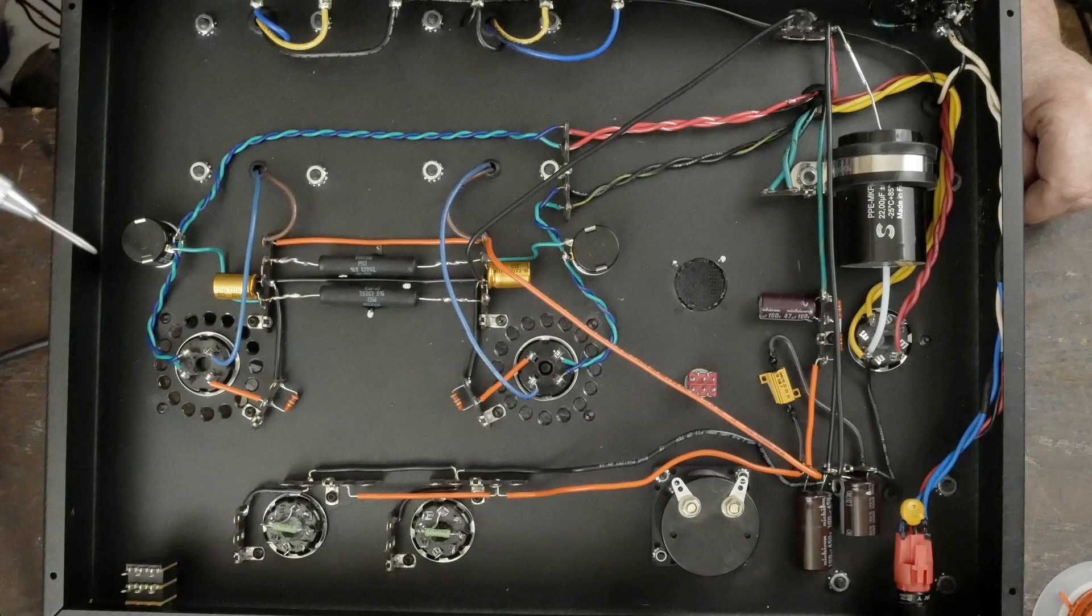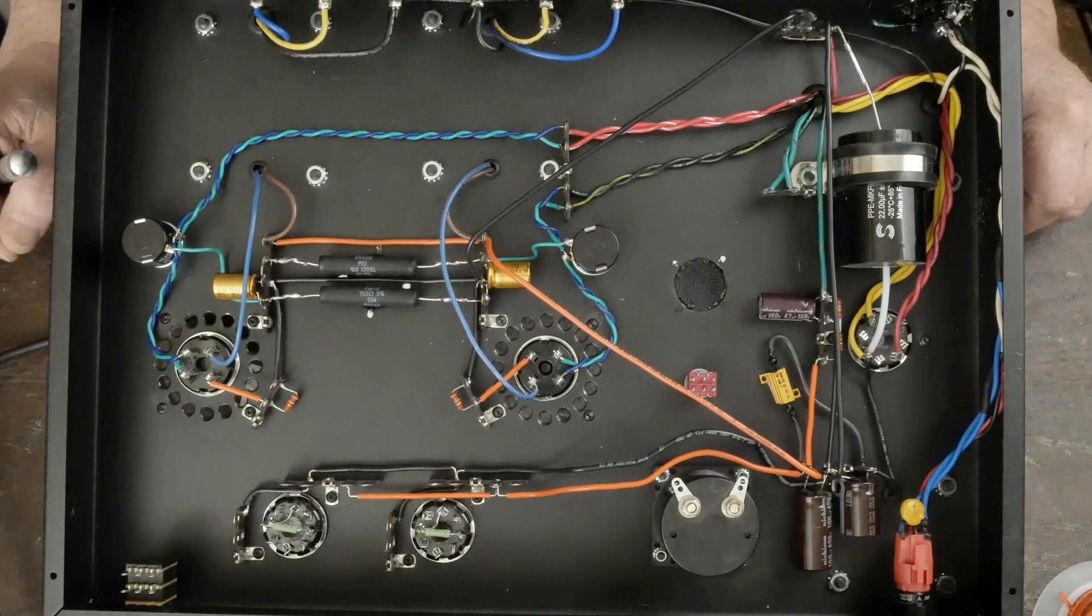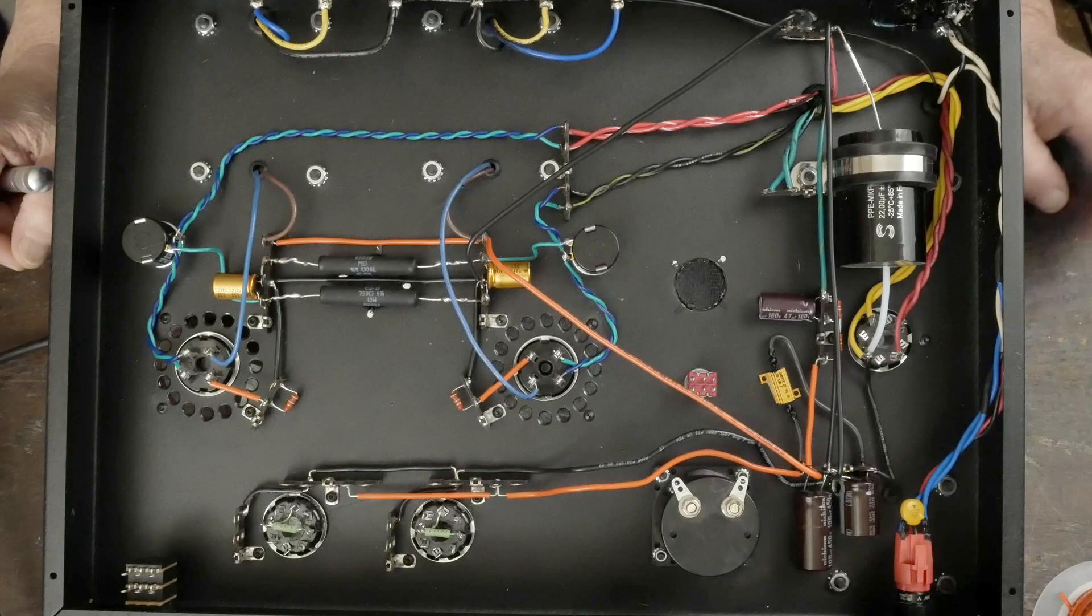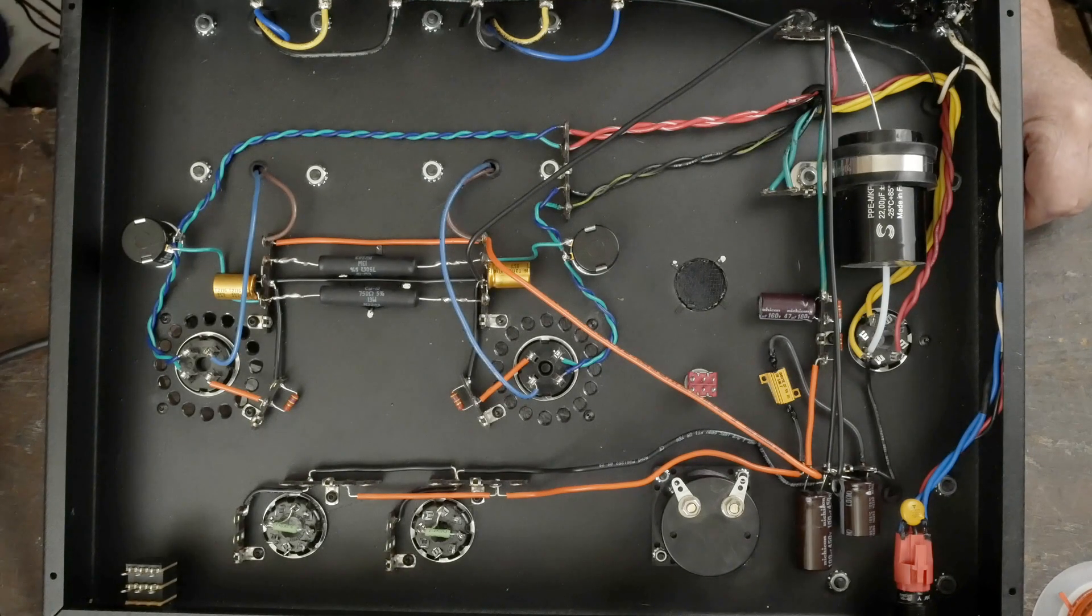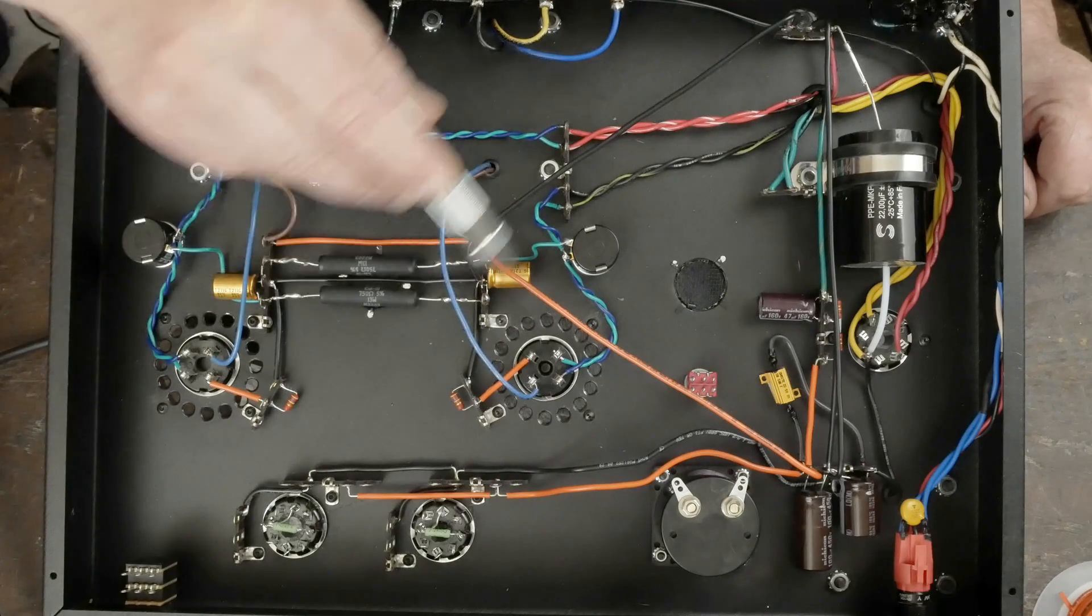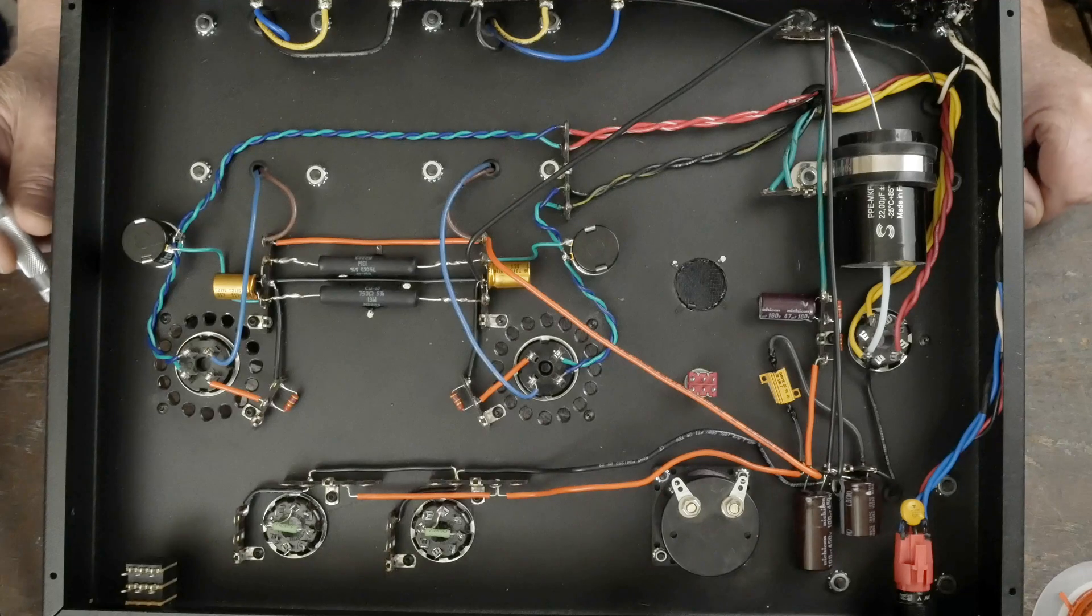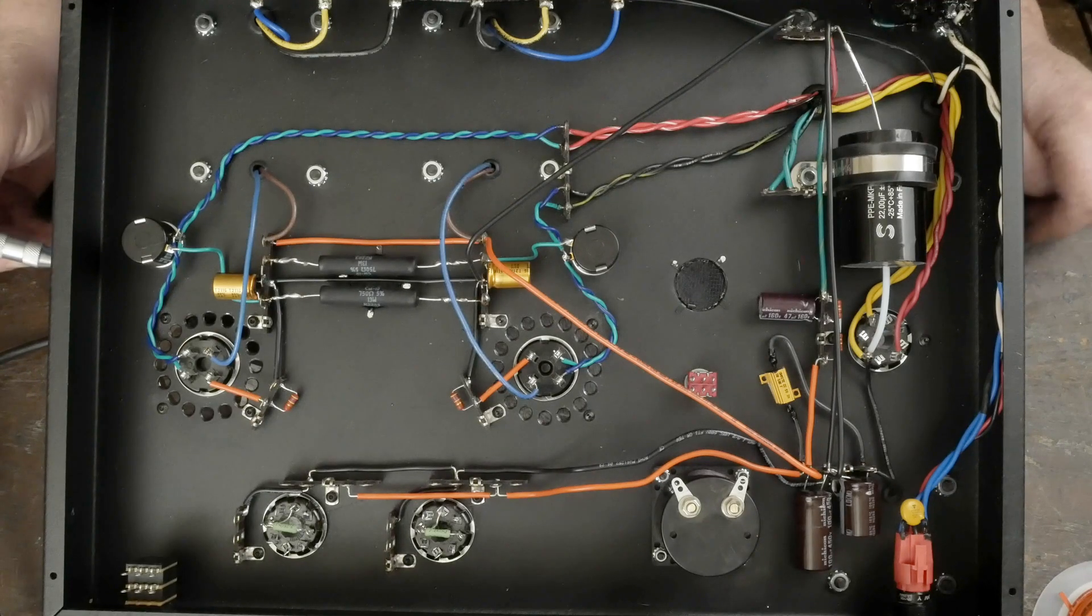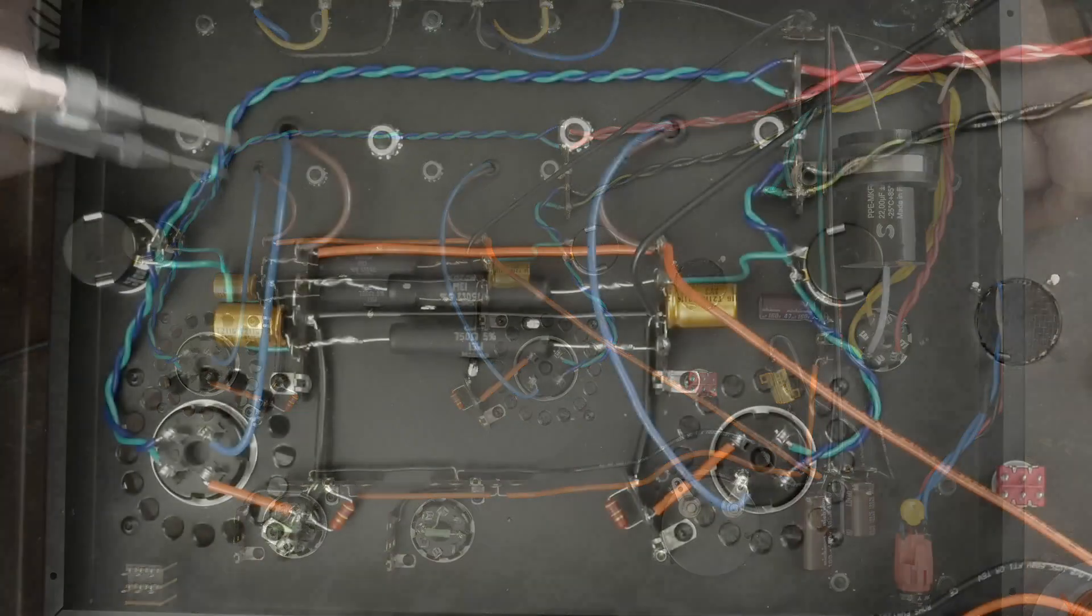Okay, so we got the 283 tube all wired up, and I got enough wiring done where I could power up the amp and check the bias on the 283 tube and make sure all the voltages look good. We'll go over that in a minute, but let me show you what we've done since the last video.